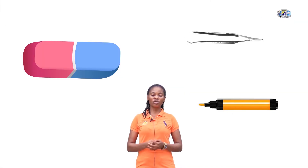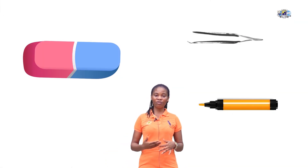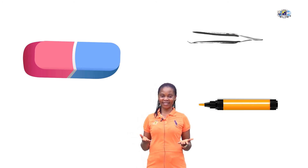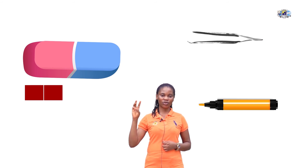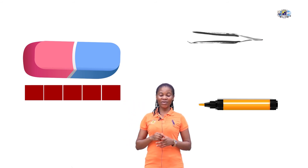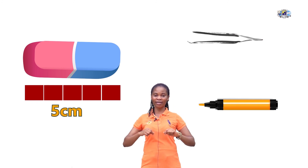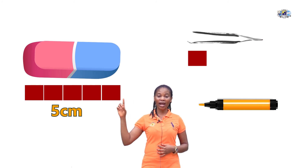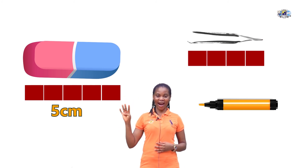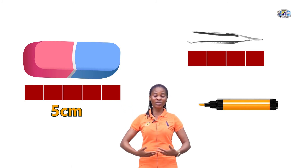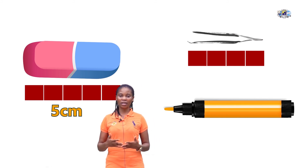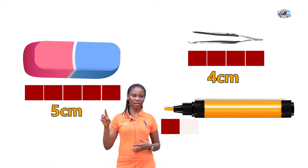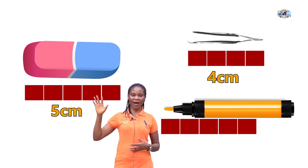We are going to use our centimetre cubes to measure the following objects and fill in the length. First we have an eraser: 1, 2, 3, 4, 5 — our eraser is about 5 centimetre cubes long. Let's measure our head clip: 1, 2, 3, 4 — our head clip is about 4 centimetre cubes long. Let's measure the length of our marker: 1, 2, 3, 4, 5, 6, 7 — our marker is about 7 centimetre cubes long.